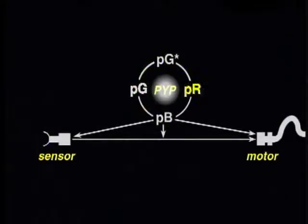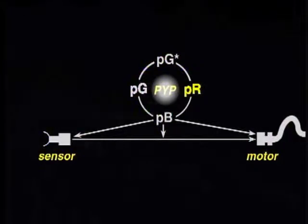The next event in the photo cycle is a proton transfer and another conformational change.